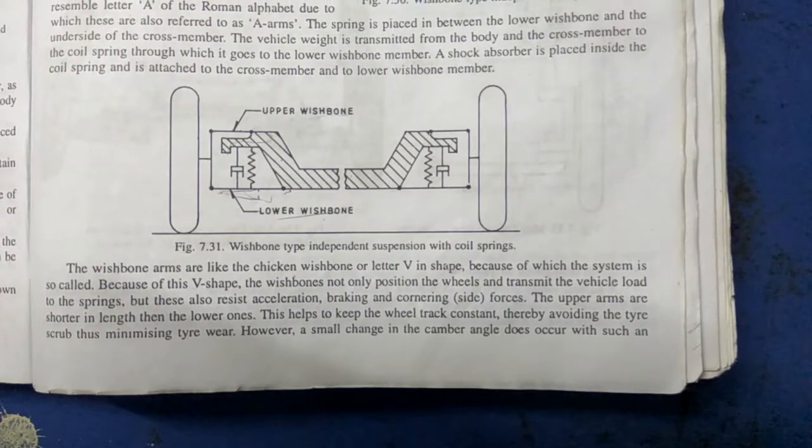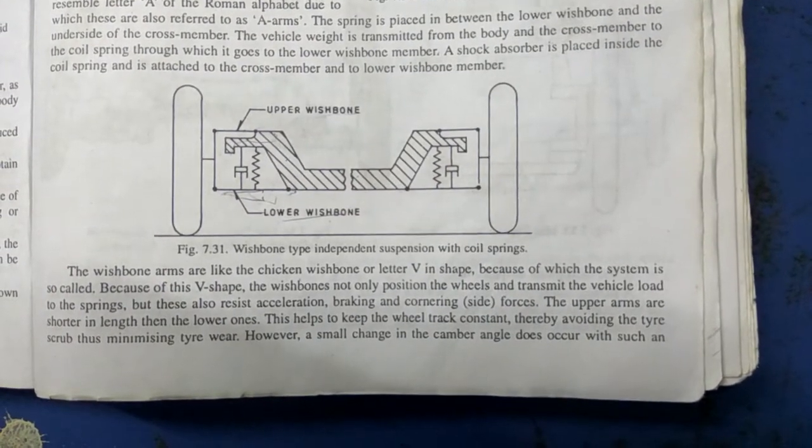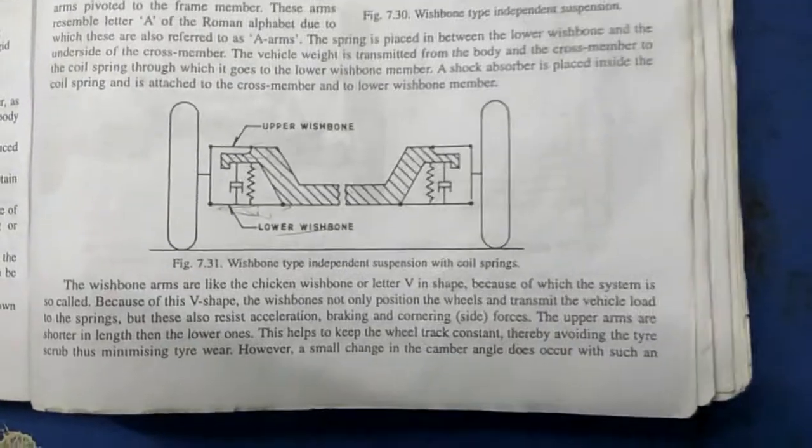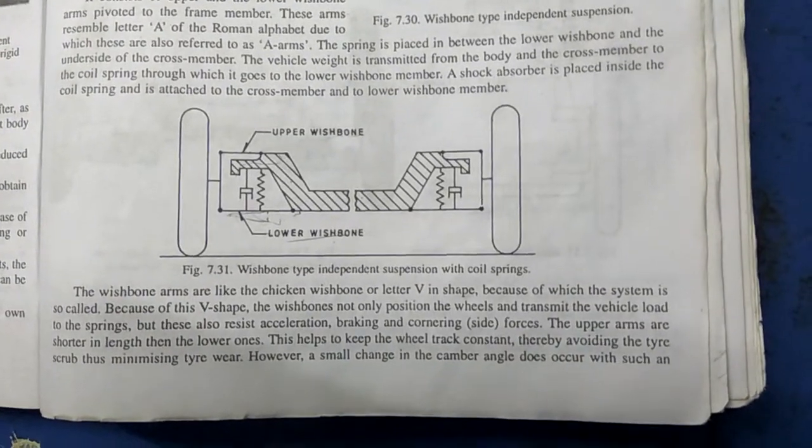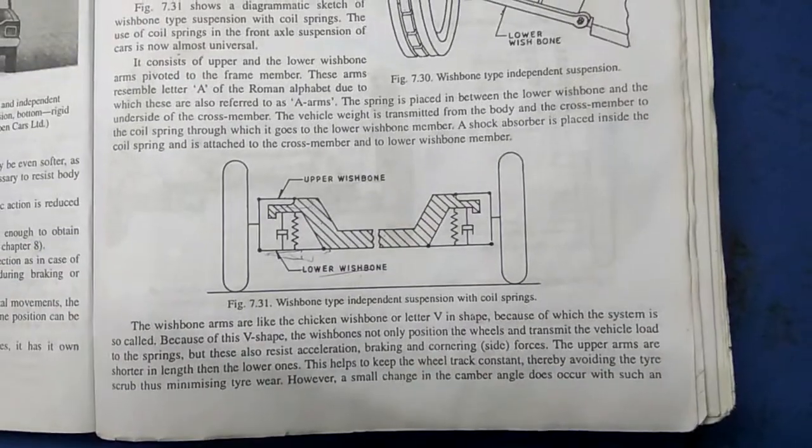To resist the cornering forces, this is the basic view of the double wishbone type of suspension.